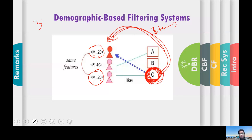Demographics can also be applied to items. For example, in the movie case, certain movies are romantic — romantic is more like a demographic feature of movies. So in demographic-based filtering, you use certain demographics of both users and items and based on that recommend certain products to different users.